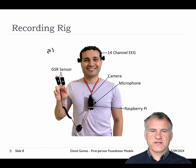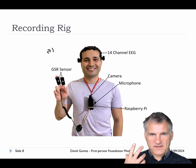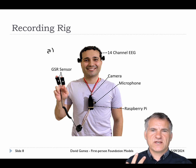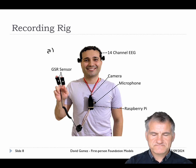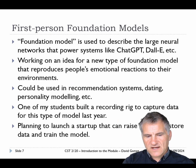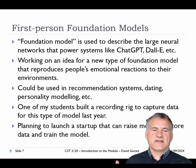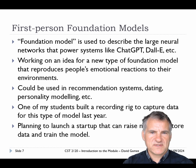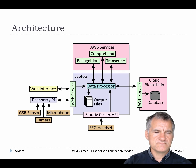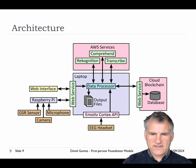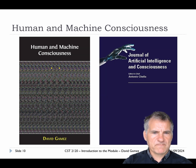Last year I ran an undergraduate project where a student built a recording wig that can capture what you're seeing, and used EEG and GSR to measure emotional reactions to those visuals. Looking forward over the next year or two, I'm planning to put together a startup to raise money, store enough data, and eventually train the model, with a lot of AI infrastructure going in using Amazon Web Services.